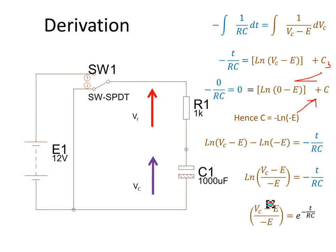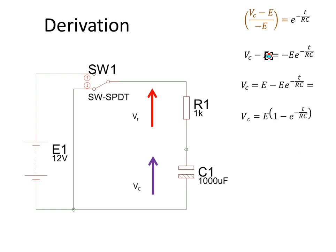Then we get rid of the log. Vc minus E all over minus E equals e to the power of minus t over RC. I'm going to cross multiply by minus E and get that.